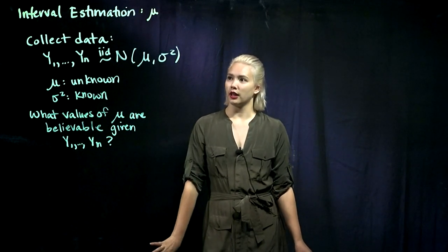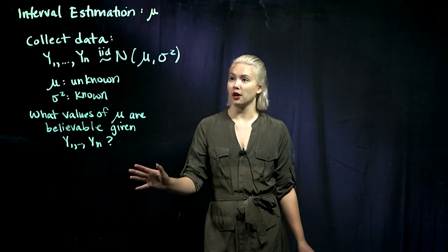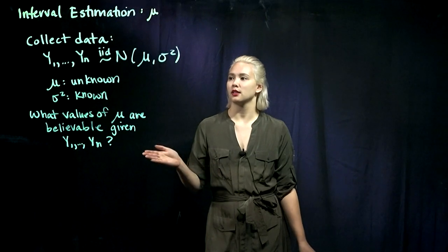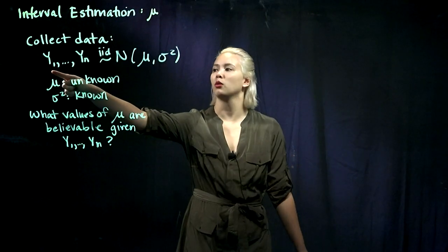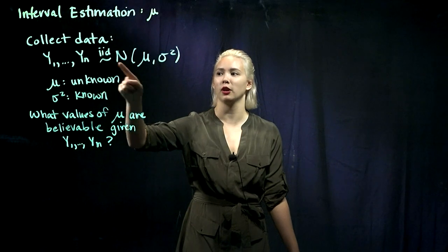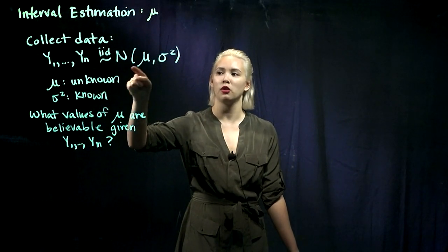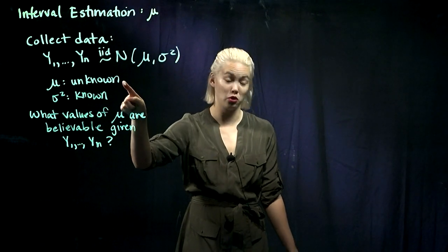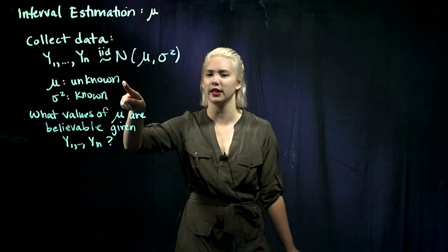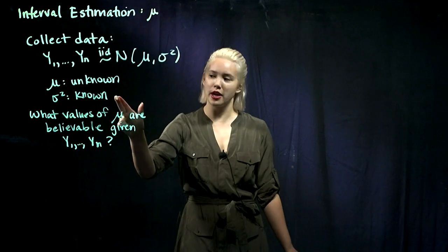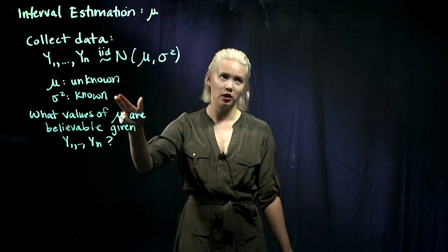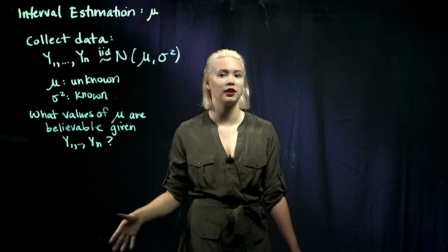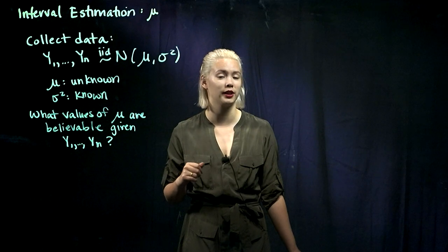First let's talk about interval estimation for a mean, mu. Let's say that we have data y1 through yn — a random sample, IID, from a normal distribution with mean mu and variance sigma squared. We'll let mu be unknown because we're trying to do interval estimation for mu. For now, we'll say sigma squared is known. This might not be very realistic, but it'll simplify things to introduce interval estimation.